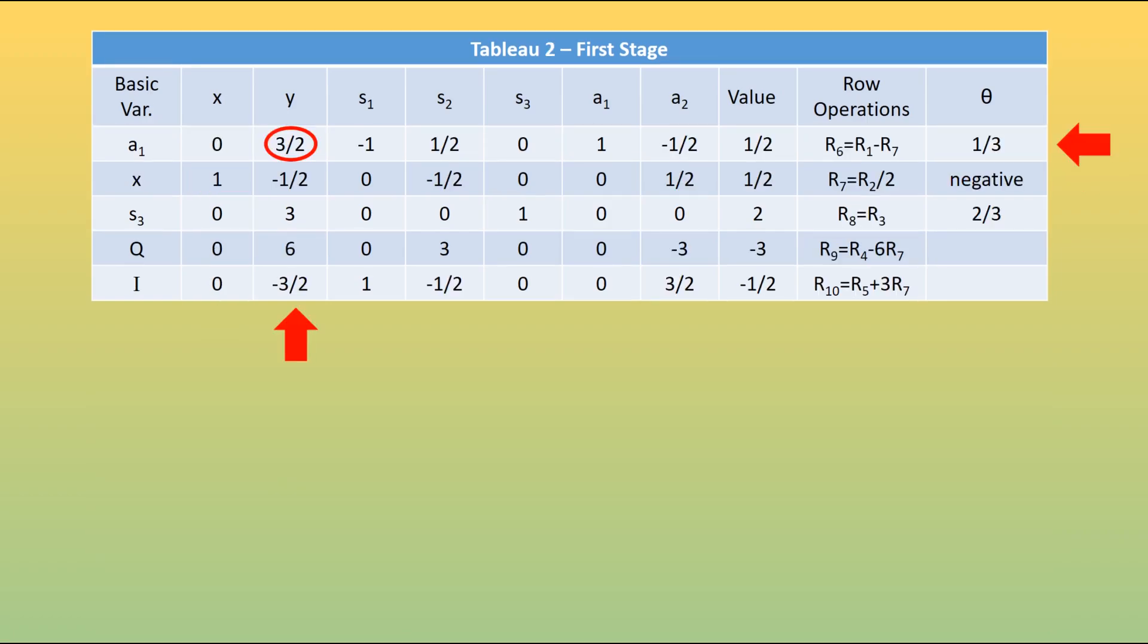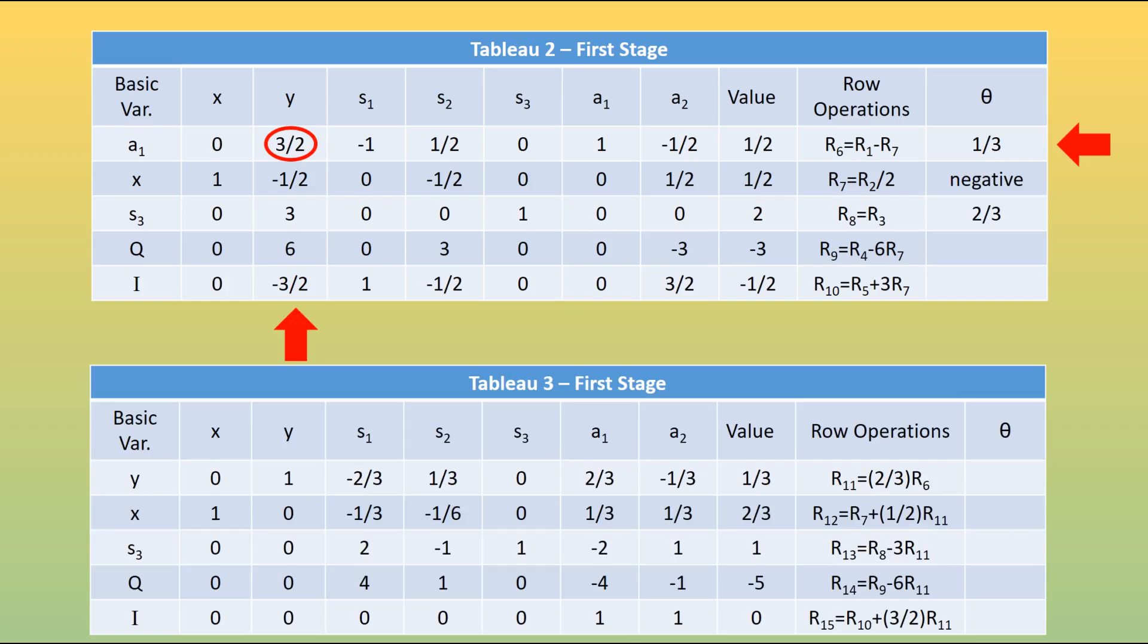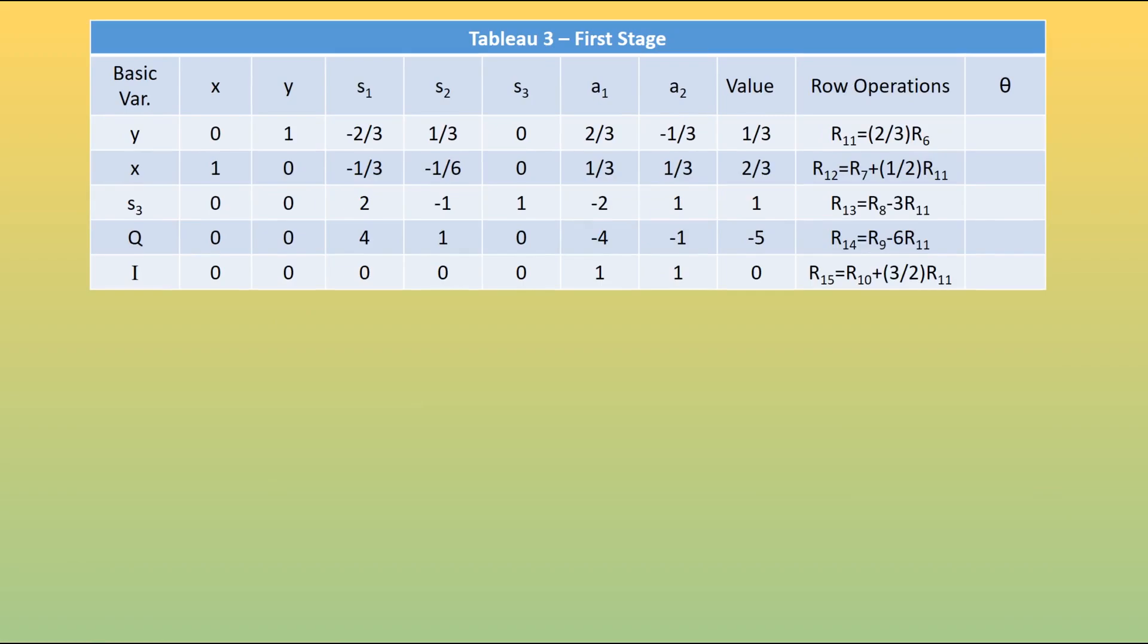So our tableau 2, we're going to use that one now. We identify our pivot again, and then we proceed with another iteration of the simplex algorithm to take us to this point. In our third tableau, we now notice that in the i row, there are no negative values for any of the variables. Now crucially, the value of i is equal to 0, looking in that value column in the i row. We have a 0 there. Because that is 0, we can continue onto the second stage.